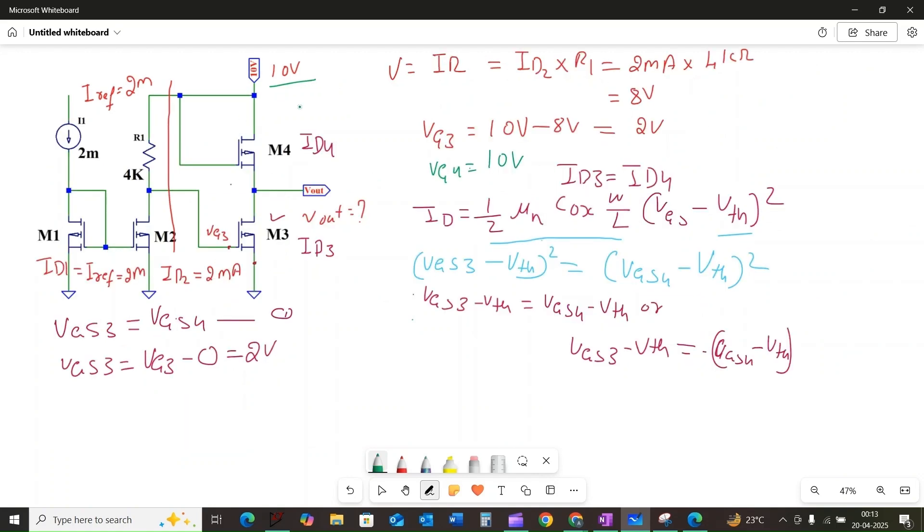For M4, the gate-to-source voltage is its gate voltage minus its source voltage, which is equal to the output voltage. So VGS4 is equal to VG4 minus Vout. We can call this equation 2.